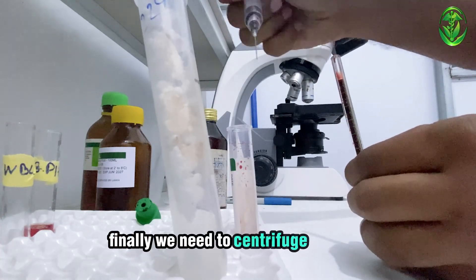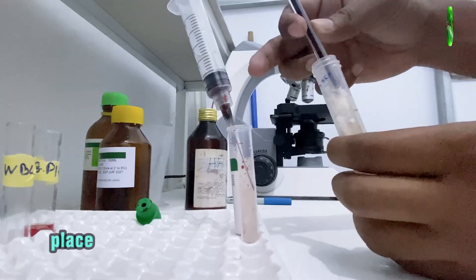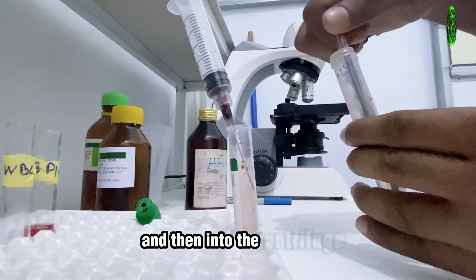Finally, we need to centrifuge the tube. Place the Wintrobe tube into the urine centrifuge tube, and then into the centrifuge.